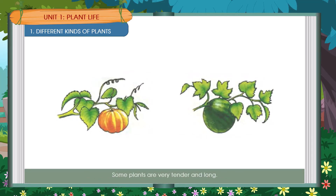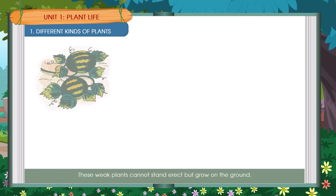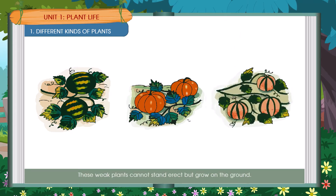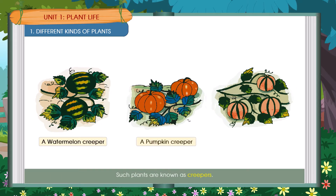Some plants are very tender and long. These weak plants cannot stand erect but grow on the ground. Such plants are known as Creepers. A Watermelon Creeper, A Pumpkin Creeper, A Muskmelon Creeper.